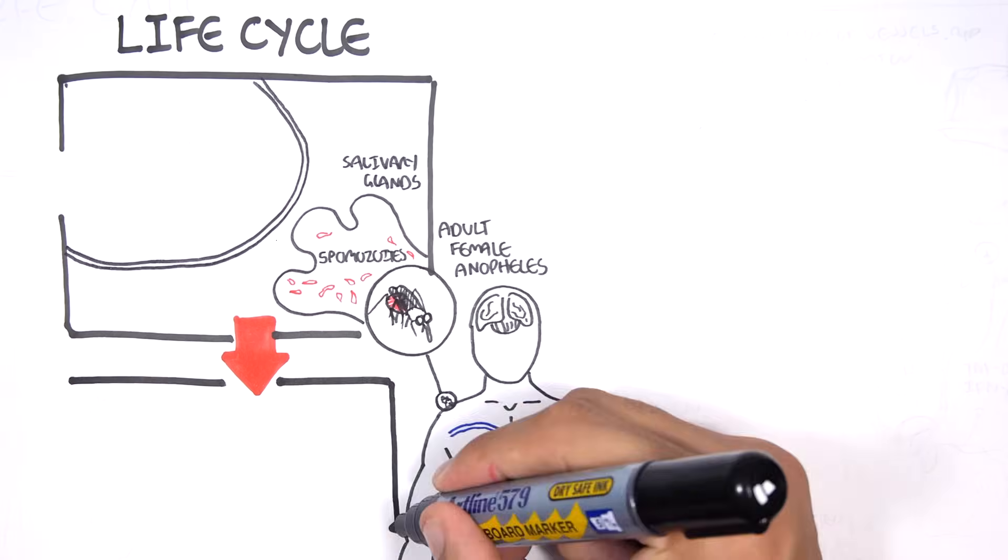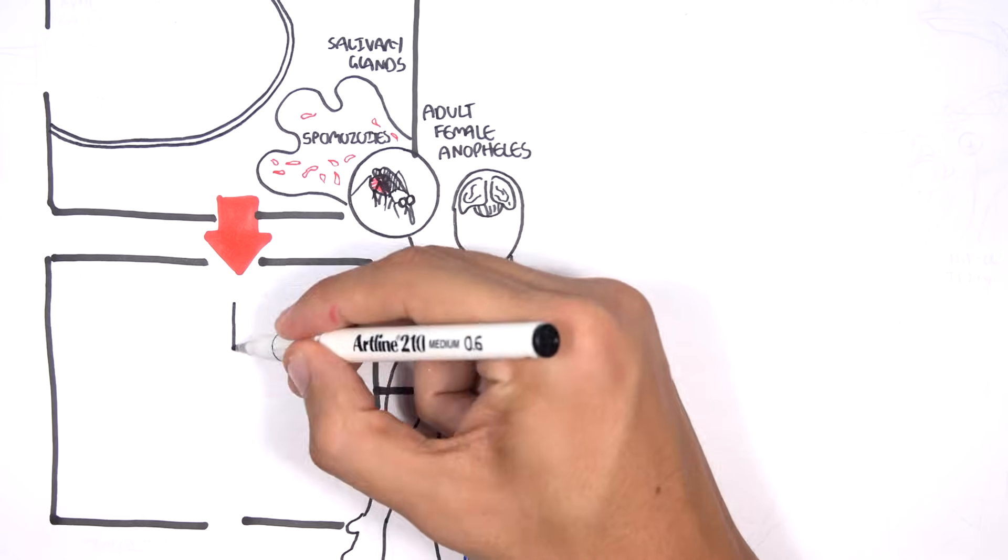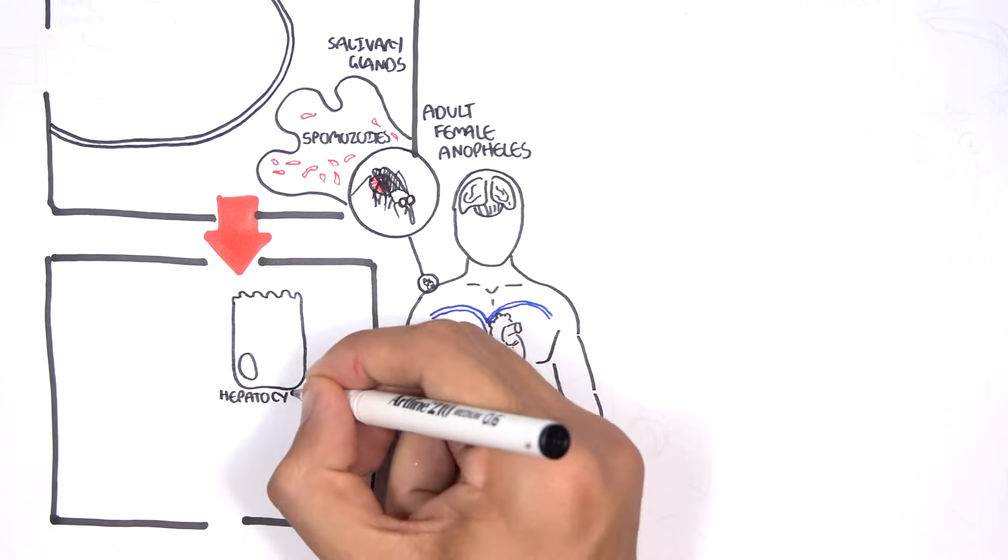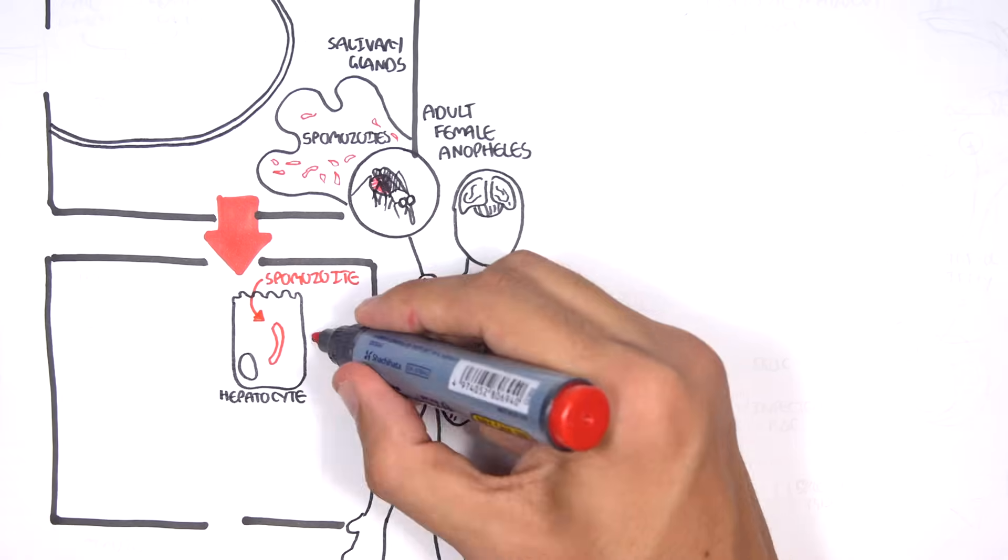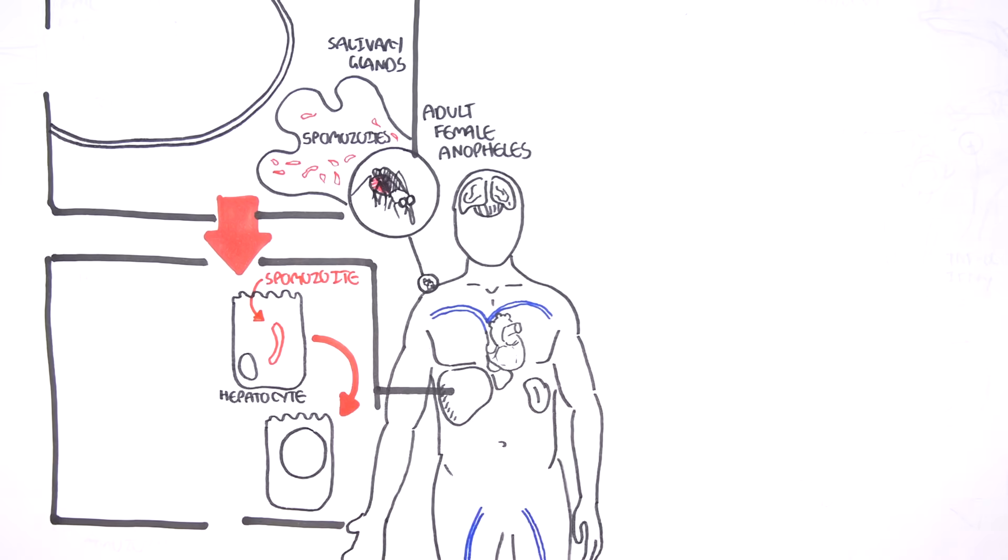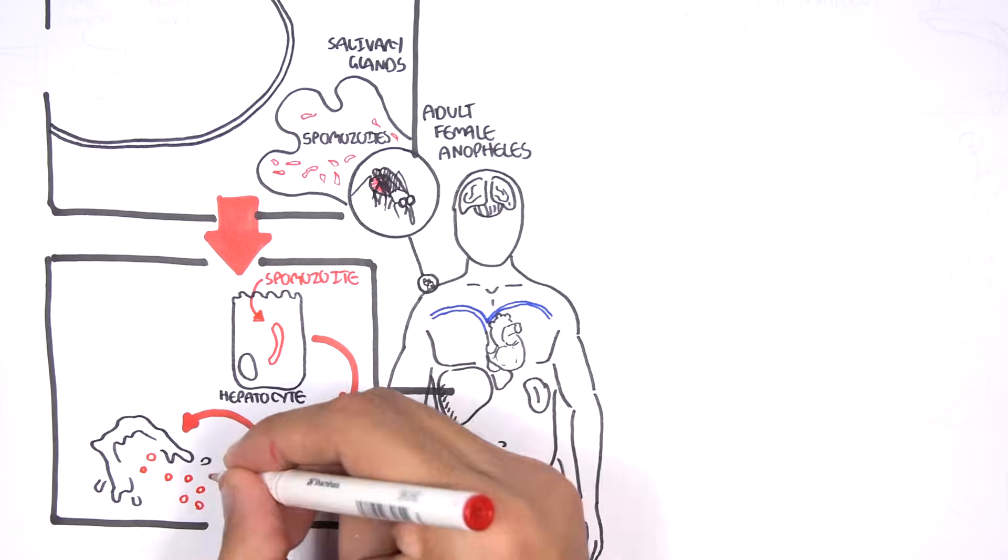The sporozoites then travel to the liver, to the cells of the liver known as hepatocytes. The sporozoites replicate within the hepatocytes to form a schizont, which eventually ruptures, releasing many merozoites.